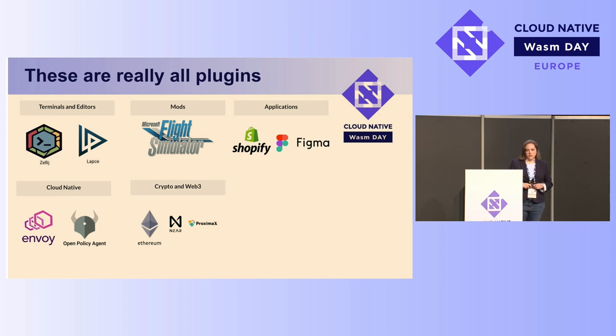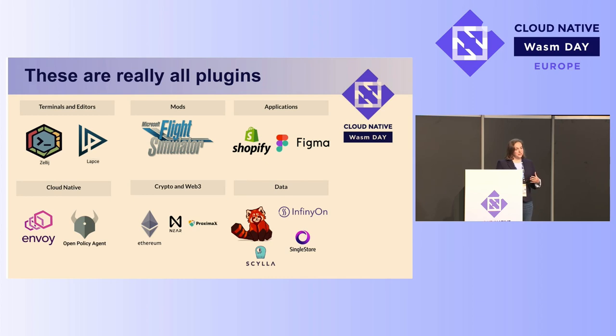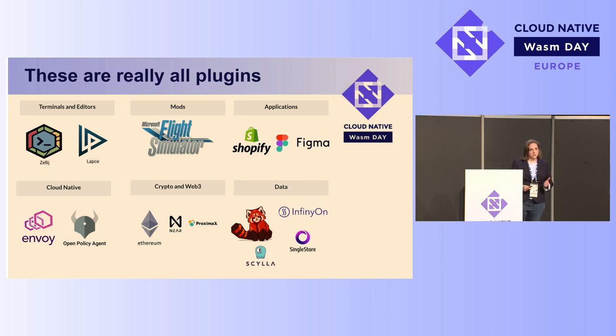Smart contracts run on the blockchain, and once some conditions are met, the smart contract executes. Any computer participating on the blockchain can execute that smart contract — which has to be safe, secure, and sandboxed. To me, that's a plugin. Redpanda and Infinyon are both data streaming engines that allow users to pass in their own transformations — essentially bringing arbitrary code into those systems. The database I work on is SingleStore, but many others are adding user-defined functions using WebAssembly, pushing compute down to the data. ScyllaDB, TiDB, and many others are doing this too.